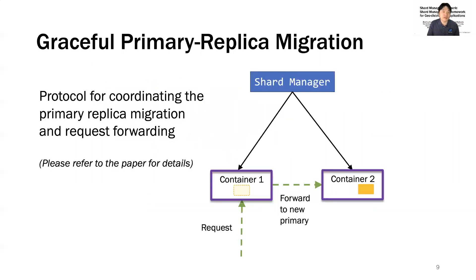In addition to handling planned operations gracefully, Shard Manager also offers graceful migration of the primary shard replica, since a primary replica often carries important responsibilities such as handling writes. This is achieved with a specific protocol allowing request forwarding to minimize primary replica downtime. Please refer to the paper for further details of the protocol.